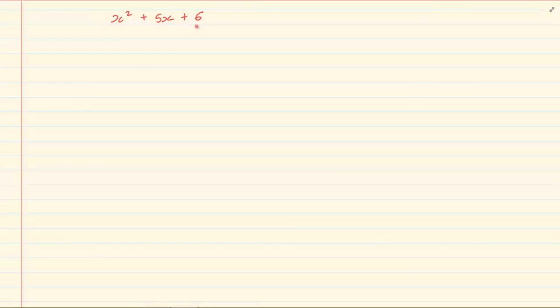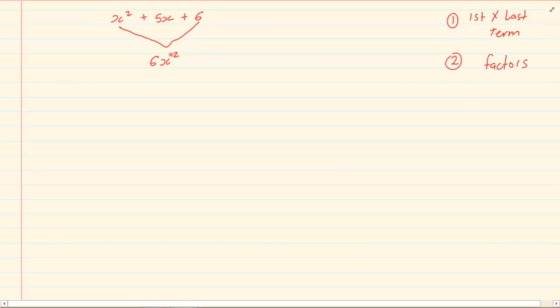What you're going to do is, you are going to multiply the first and the last term. So, we multiply the first and the last term. What we're going to get is 6x squared. The second thing we're going to do is, we are going to find factors of the 6x squared. So, if we take 6x squared,